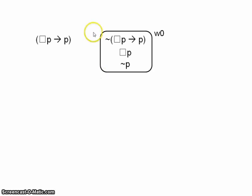And look at that. That's all we can do. Our tree can go no further. It's complete, but it's still open. And that would imply that our original argument is invalid.